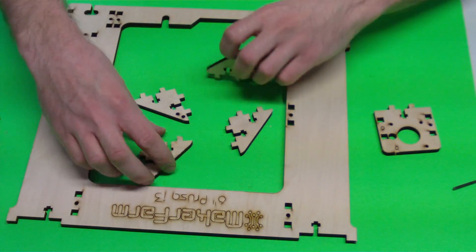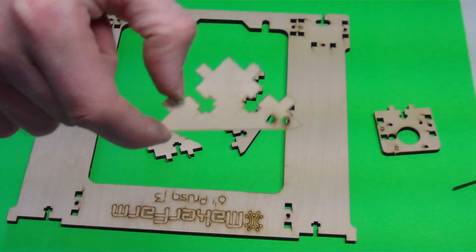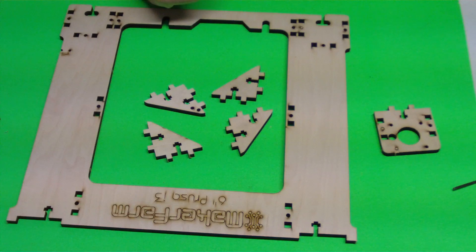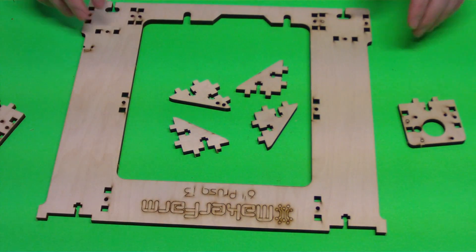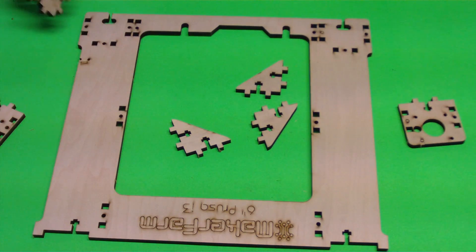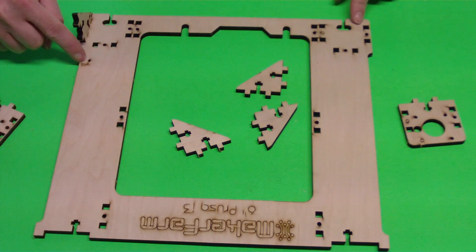There's also four of these. The only difference with these is one of them has a set of holes in it. Those holes are so that we can zip tie some wires to it to keep our cables all managed nicely. This one is going to go on the outside edge over here, right by where our switch is.